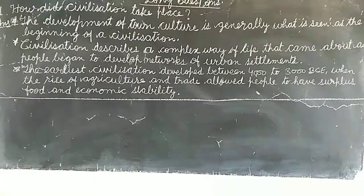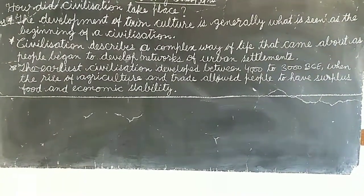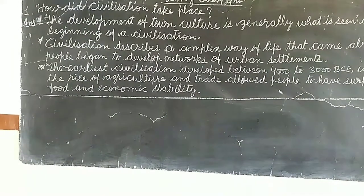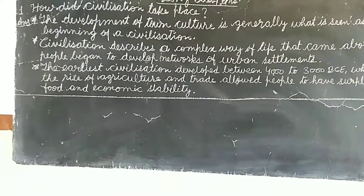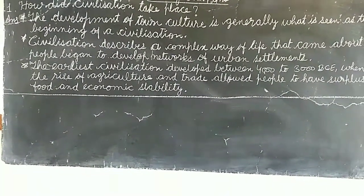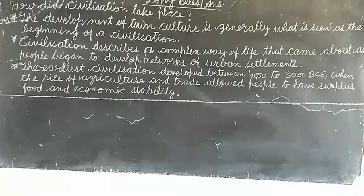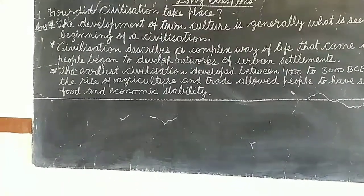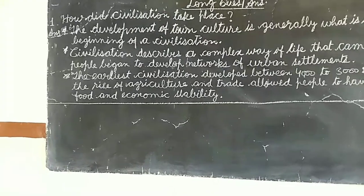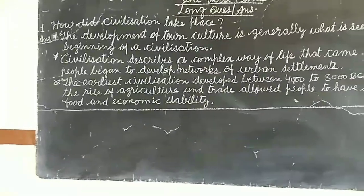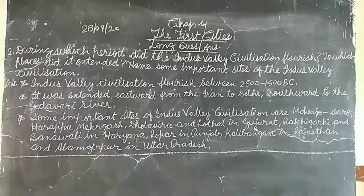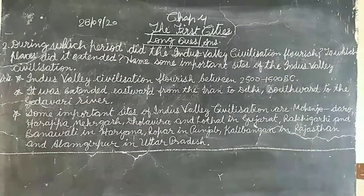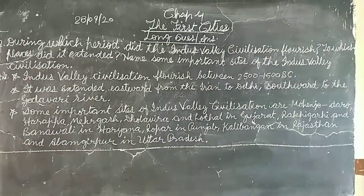Third point: the earliest civilizations developed between 4000–3000 BCE when the rise of agriculture and trade allowed people to have surplus food and economic stability. When they started agriculture, stored surplus, that was also part of how civilization took place.